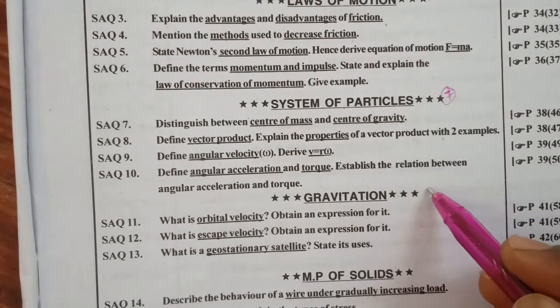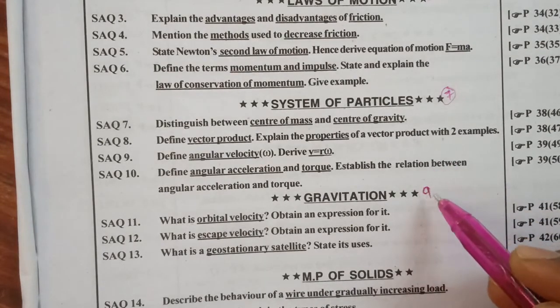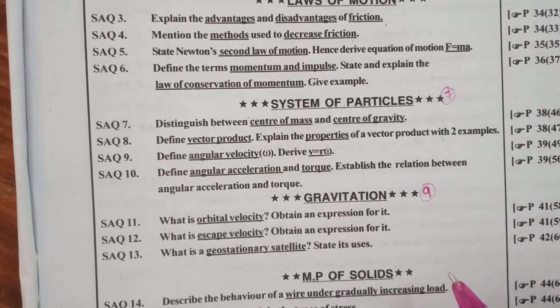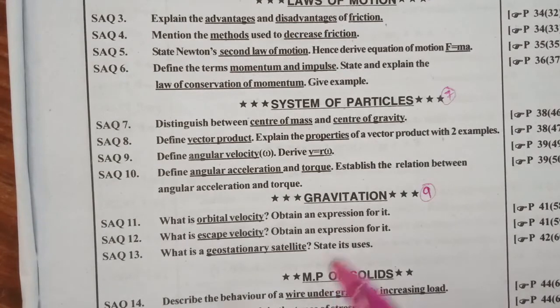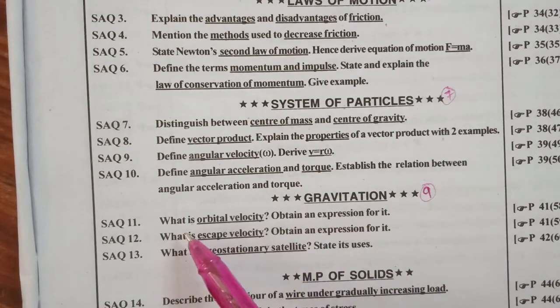Next, gravitation. Galileo, Newton, Kepler. This is a very important chapter. It is for our daily life and also for the IPE examination. What is orbital velocity, obtain an expression for it. What is escape velocity, obtain an expression for it. What is geostationary satellite, state its uses.